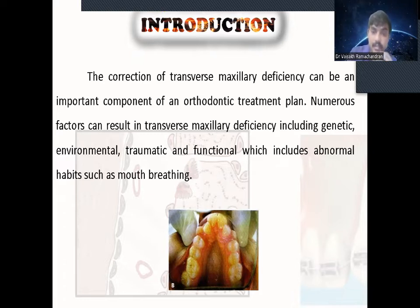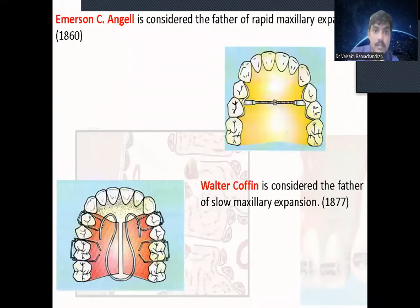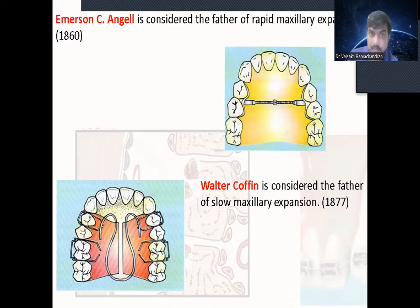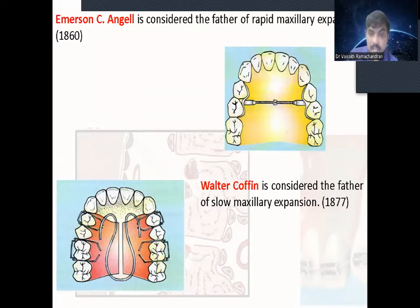These all can cause deficiency of the maxillary transverse dimension. The emergency angel is considered the father of rapid maxillary expansion. There are two types of expansion: rapid and slow. Emergency angel is the father of rapid maxillary expansion and Fauchard is the father of slow maxillary expansion.